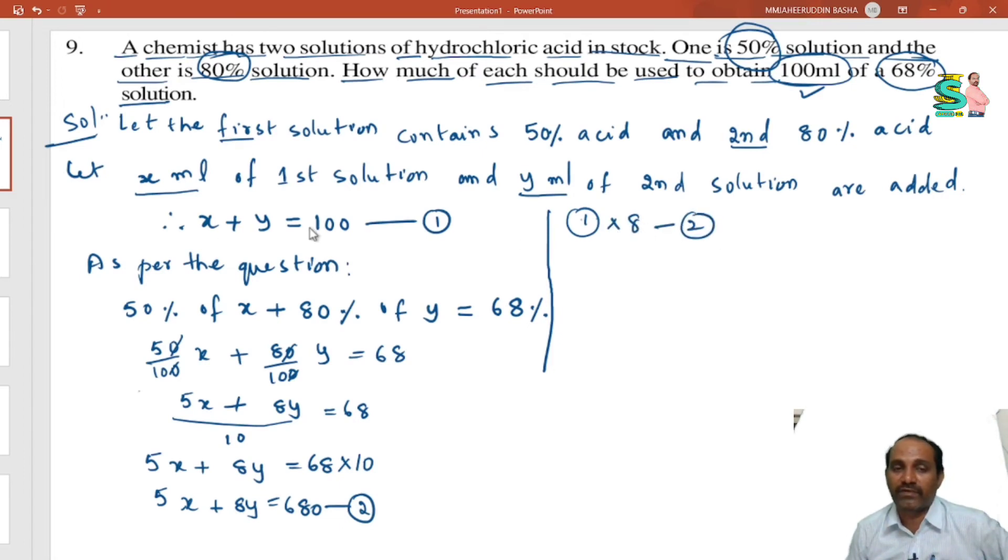Equation 1 is x plus y equal to 100. You should multiply each term with 8, then you will get 8x plus 8y is equal to 800. Then second equation 5x plus 8y is equal to 680.